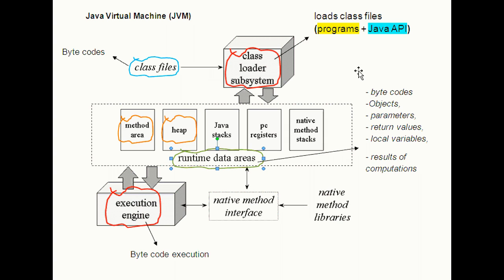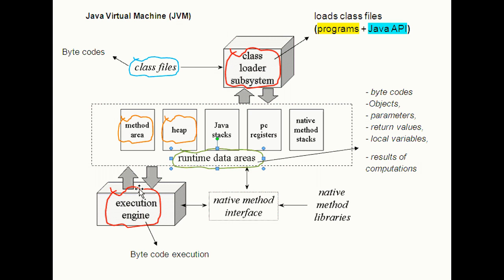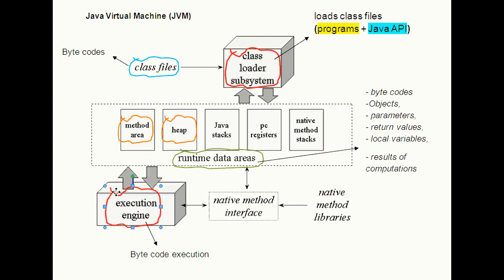Java Virtual Machine and Java API are both components of the Java platform. The primary function of JVM is to load your .class file and execute its bytecode. JVM contains a class loader subsystem, runtime data areas, and an execution engine. The class loader subsystem is a mechanism for loading types such as classes or interfaces. It loads class files from your Java programs and from the Java API. Each JVM has an execution engine responsible for executing the instructions contained in the methods of the loaded classes. Bytecodes are executed in the execution engine.